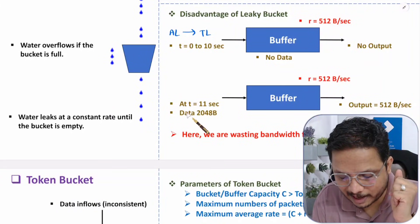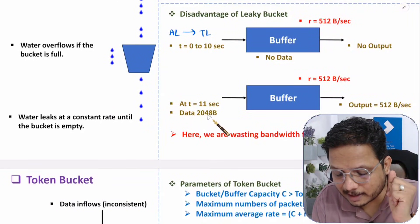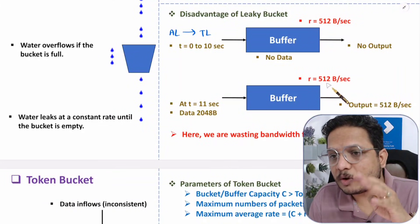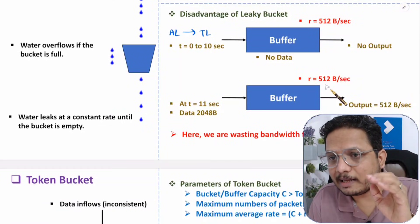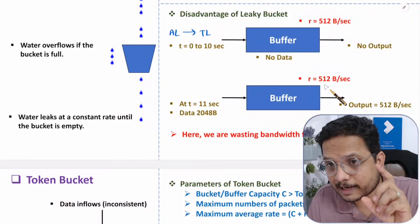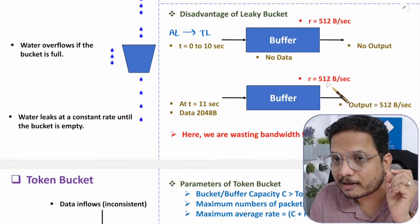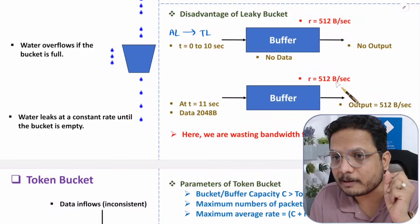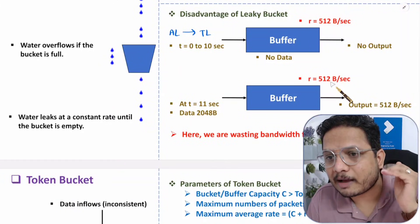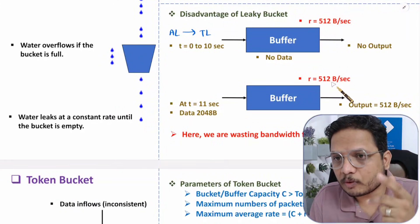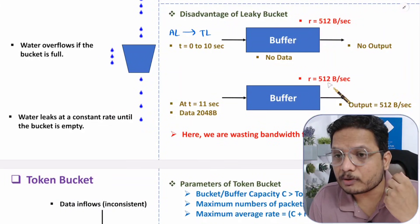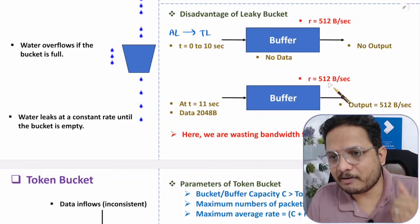The data gets output at 512 bytes per second, taking 4 seconds. So practically it takes 14 seconds total, but in 14 seconds at 512 bytes per second we could have output 14 × 512 bytes. In reality we only sent 512 × 4 bytes worth. This means we are wasting bandwidth. This is the basic issue with the leaky bucket algorithm, and to resolve it we have the token bucket.